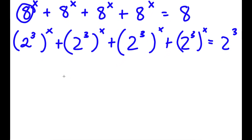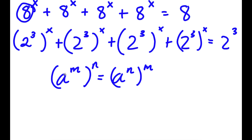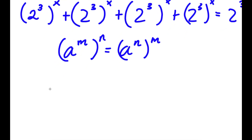Now, if I have something in the form a to the power of m to the power of n, this is the same thing as a to the power of n to the power of m. So 2 to the power of 3 to the power of x is the same thing as 2 to the power of x to the power of 3.